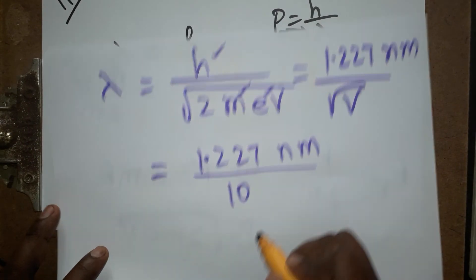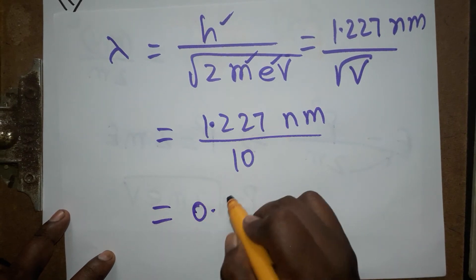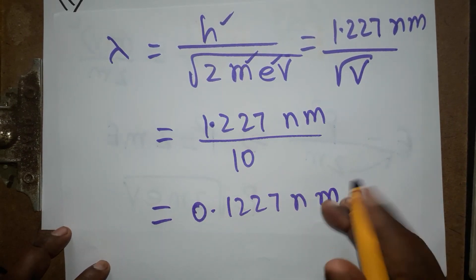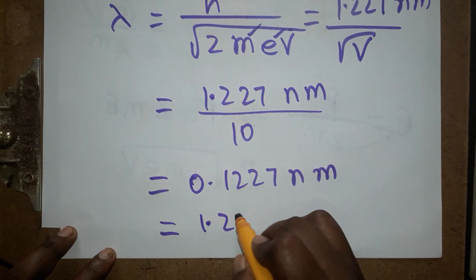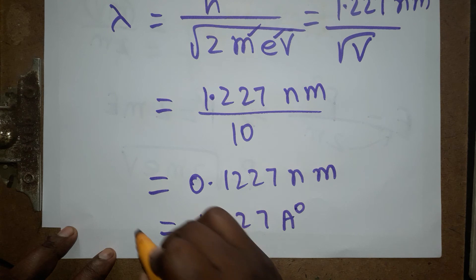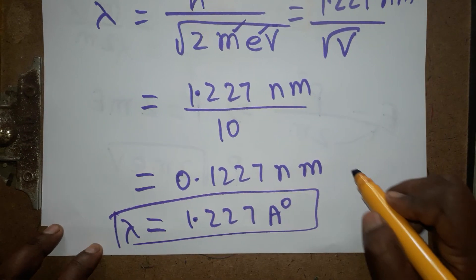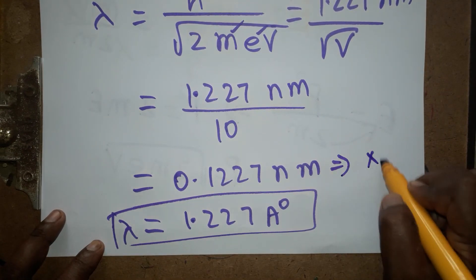The same problem, if you want in angstrom unit, 1.227 angstrom unit, same value. Nanometer is 10 power minus 9 meter. Angstrom unit is 10 power minus 10 meter with this value.